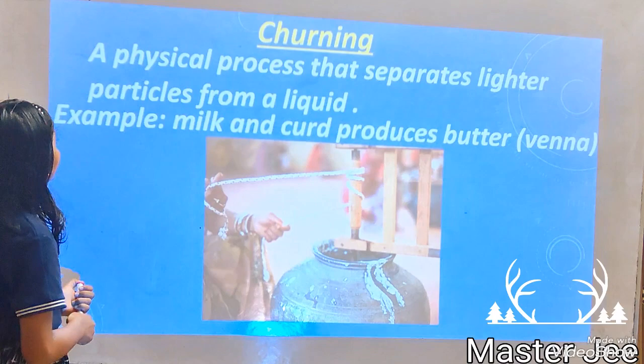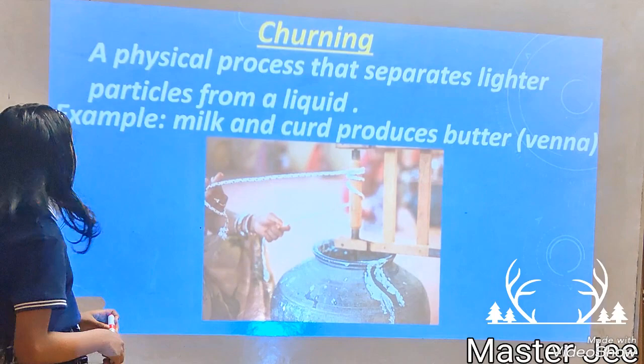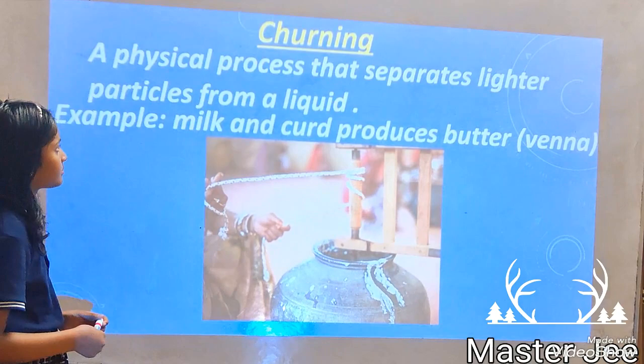Churning. Churning is a physical process that separates lighter particles from a liquid. For example, milk and curd produces butter. Thank you.